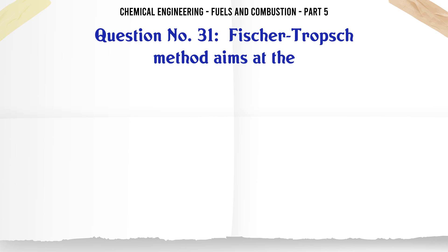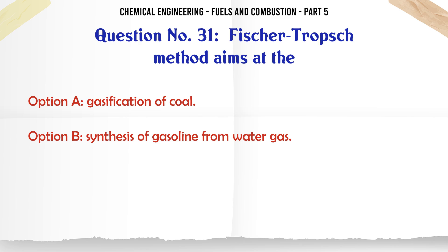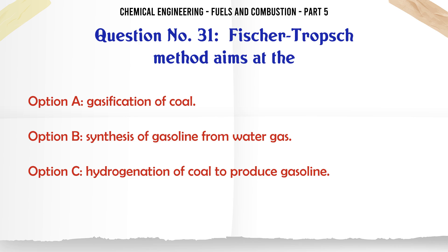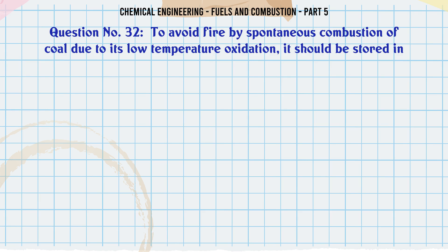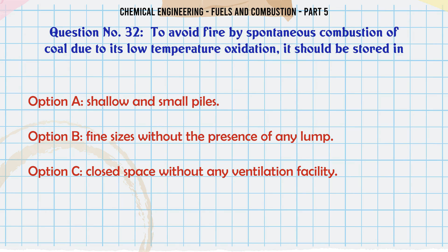The Fischer-Tropsch method aims at the: A. Gasification of coal. B. Synthesis of gasoline from water gas. C. Hydrogenation of coal to produce gasoline. D. None of these. The correct answer is synthesis of gasoline from water gas.